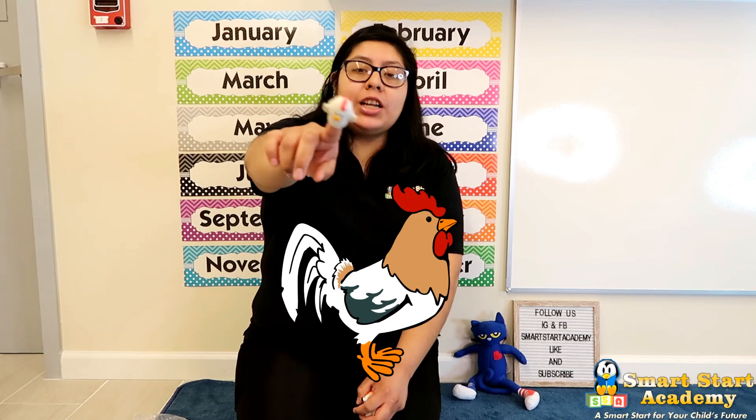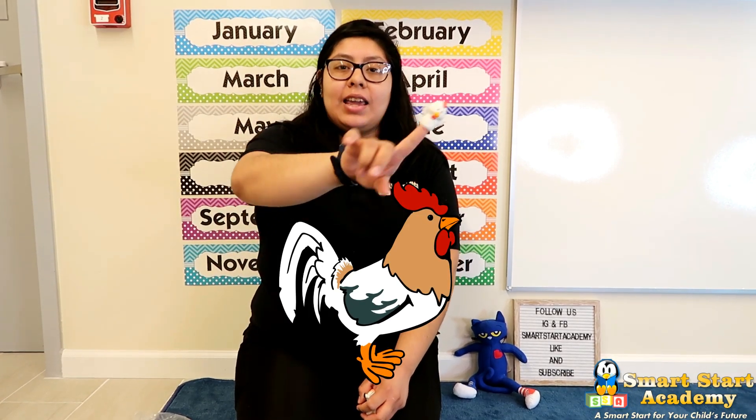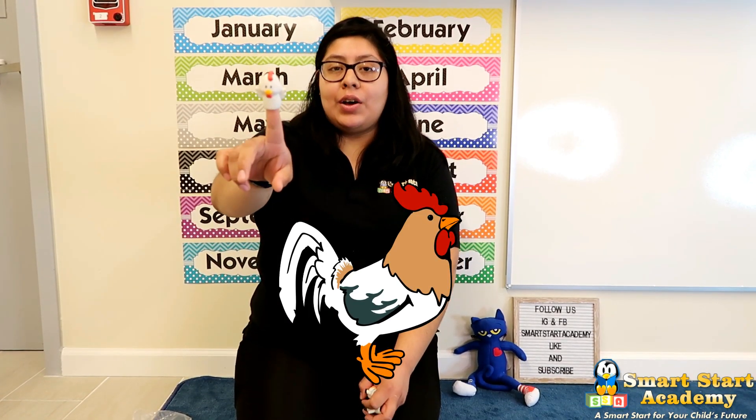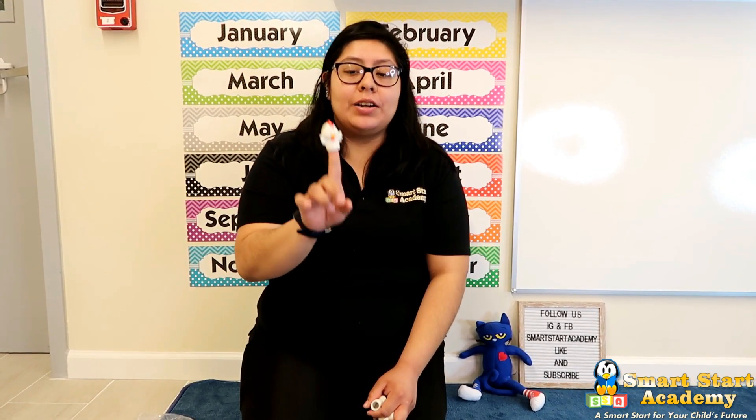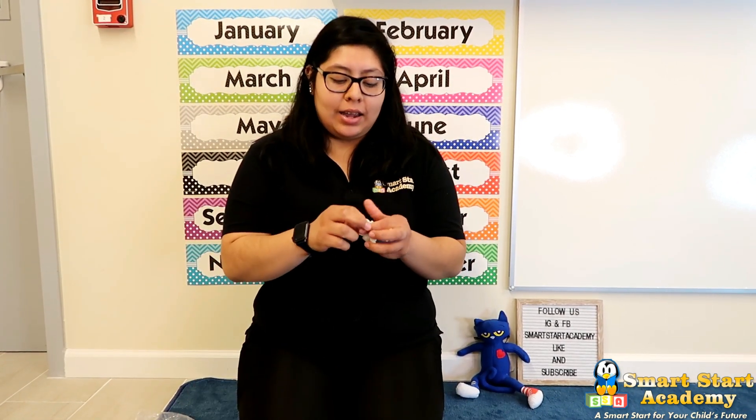And on that farm he had a... What is it, friends? It's a little chicken. E-I-E-I-O. With a cluck cluck here and a cluck cluck there. Here a cluck, there a cluck, everywhere a cluck cluck. Old MacDonald had a farm. E-I-E-I-O.